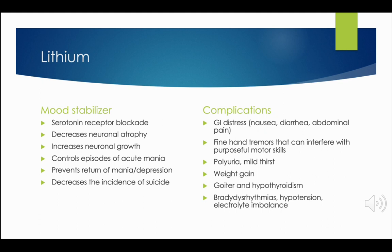Complications or adverse side effects include GI distress such as nausea, diarrhea, and abdominal pain. You can administer the medications with meals or milk to help decrease that. Fine hand tremors can interfere with purposeful motor skills, and stress and caffeine can make those worse. A medication called propranolol can help manage that. We also like to keep the dose as low as possible, give it in divided doses, or use a long-acting formulation. Hand tremors can also be a sign of lithium toxicity, so we want to make sure we educate the patient on that.